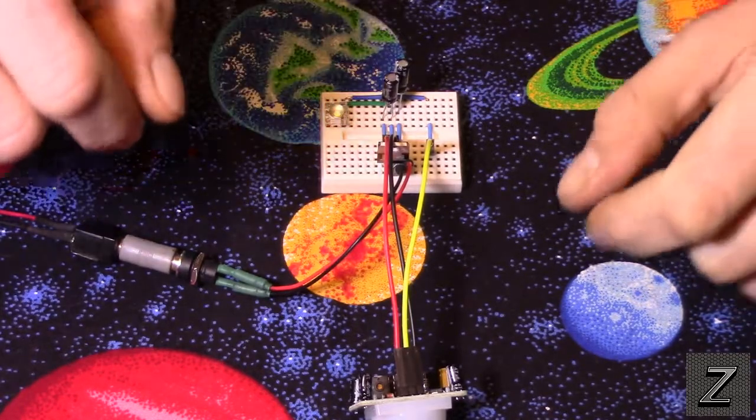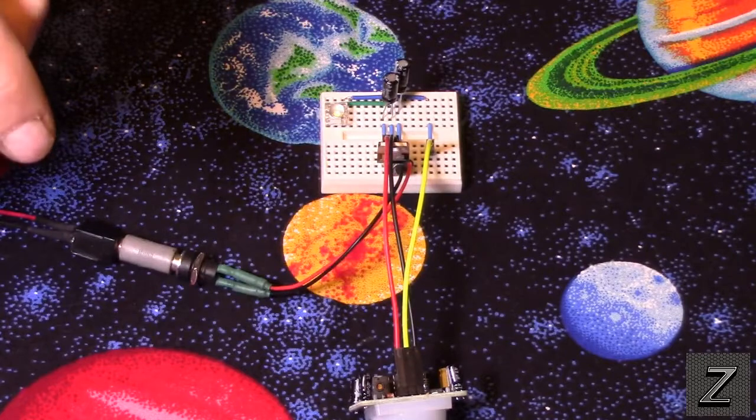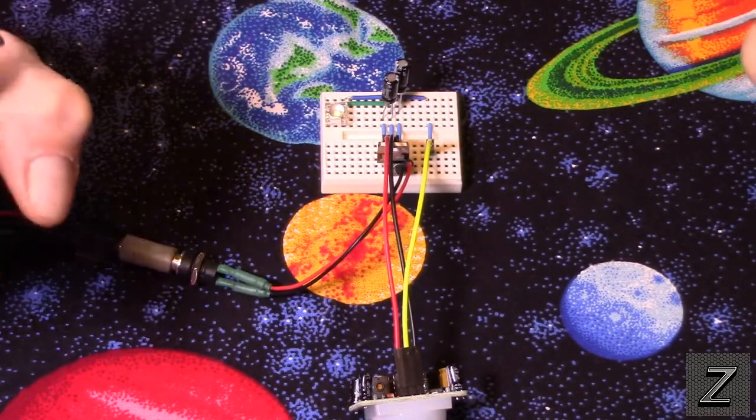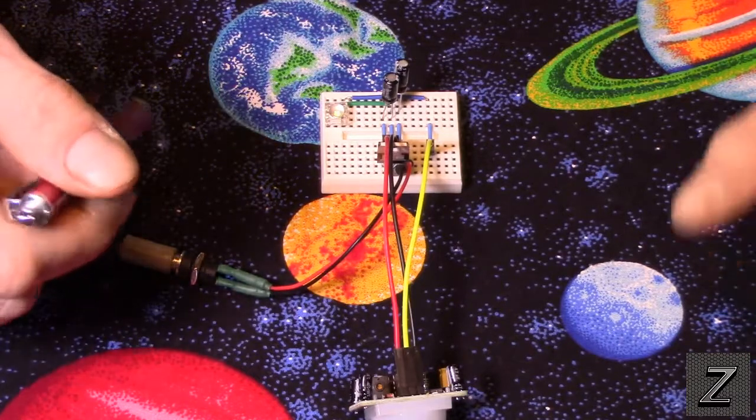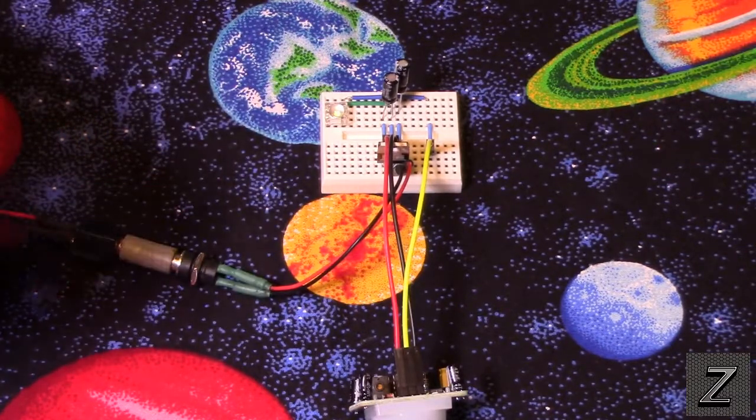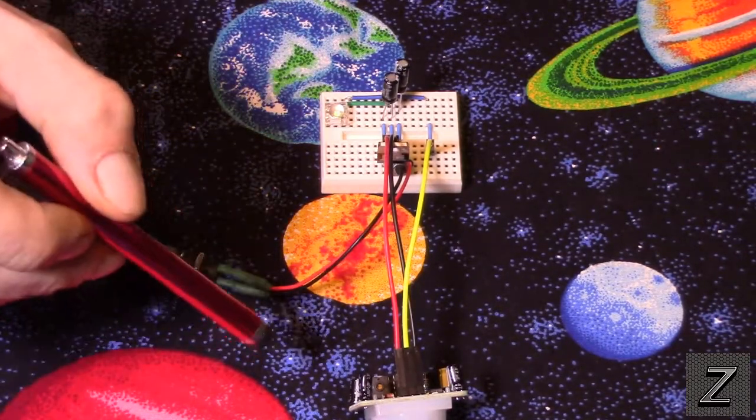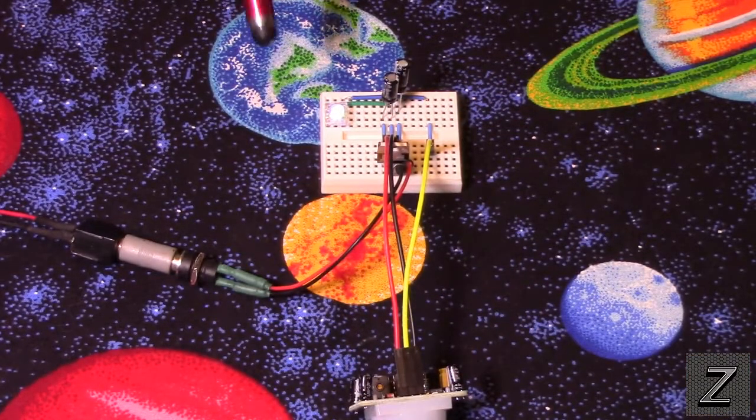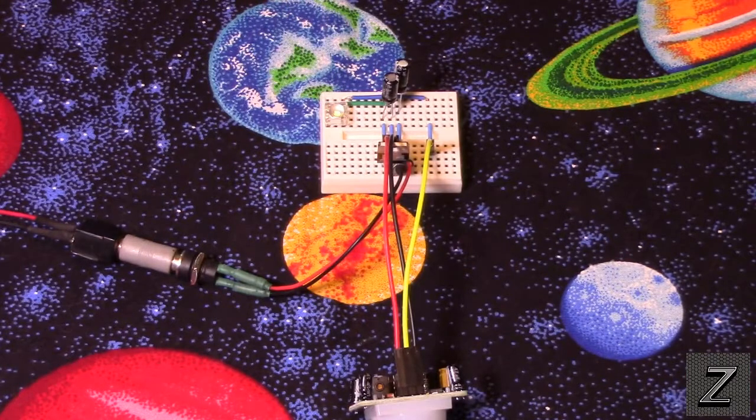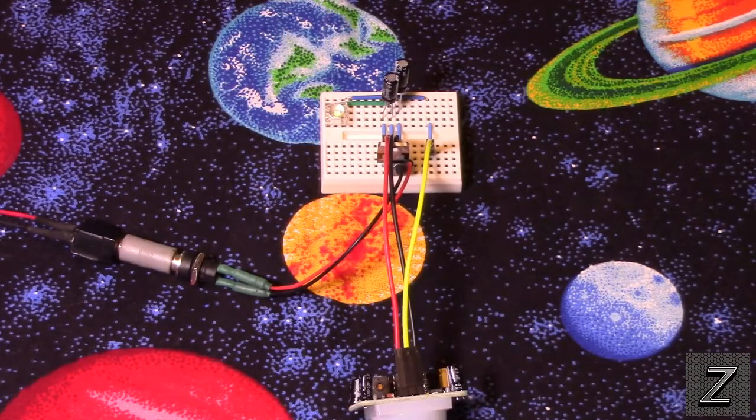Now these little PIR sensors are real cheap and readily available on eBay, Amazon, DX, all over the internet, and they are extremely cheap. And it detects the motion and it lights the LED.